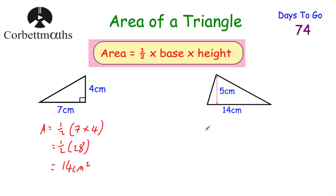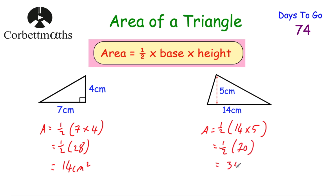For the second triangle, the area equals half the base times the height: half of 14 times 5. 14 times 5 is 70, and half of 70 is 35. So the area of that triangle is 35 centimetres squared. We could also have halved the base to get 7, then done 7 times 5 equals 35, or halved the height to get 2.5 and done 2.5 times 14.